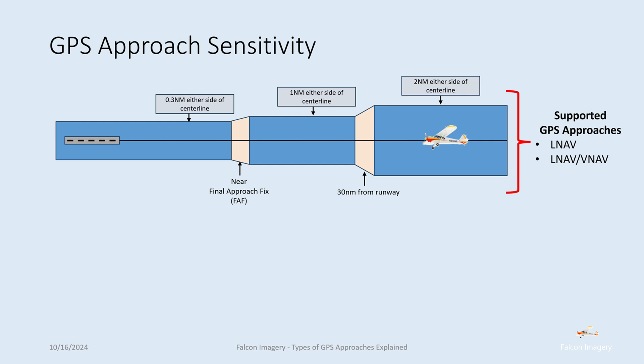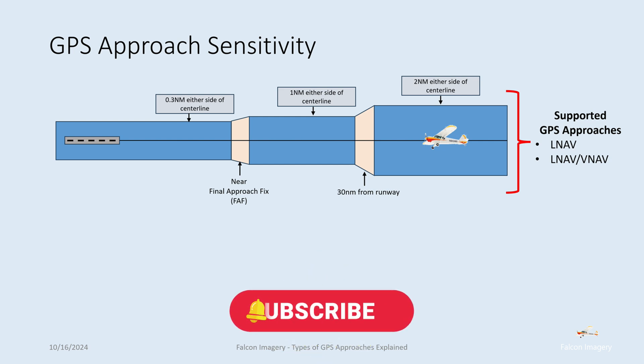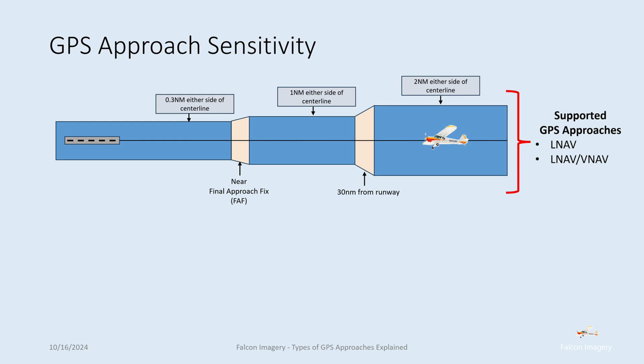Your LNAV and LNAV/VNAV type approaches have this type of sensitivity. Notice that near the runway, the sensitivity is not increasing — it stays at 0.3 nautical miles. That is one of the reasons why LNAV approaches are not considered precision.